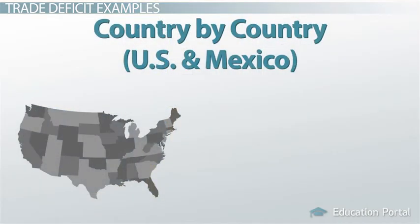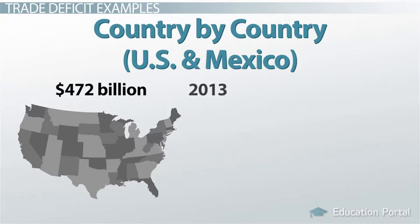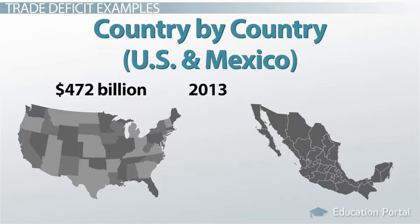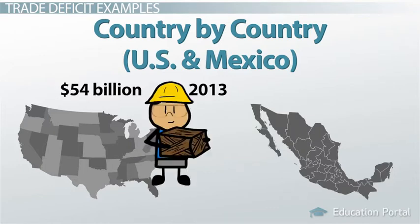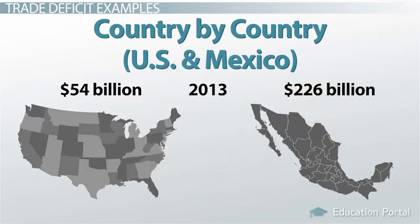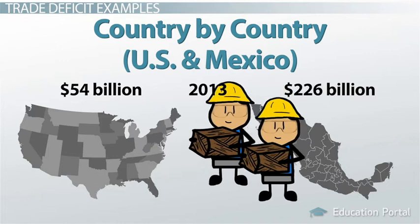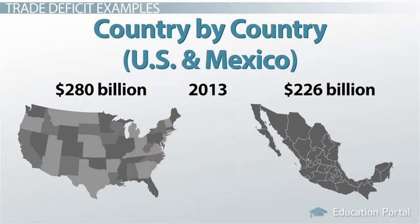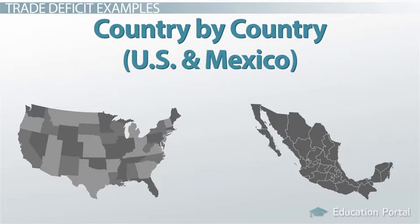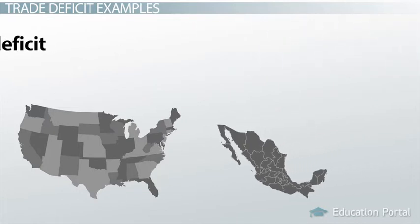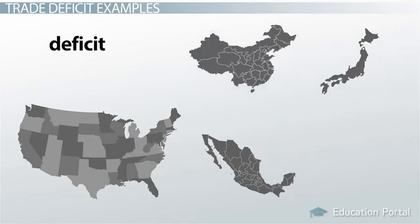Country by country. You can look at deficits as a whole, such as the $472 billion 2013 US deficit, or you can look at them country by country. For example, the trade deficit for the United States with Mexico was approximately $54 billion in 2013. The US sold Mexico over $226 billion of goods, but we bought or imported nearly $280 billion of goods. It is important to note that some of the largest trading partners that the US often runs yearly deficits with are China, Japan, Germany, Mexico, and Canada.